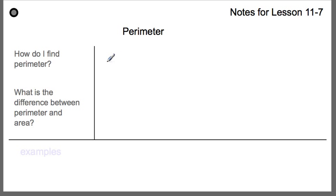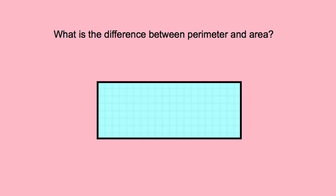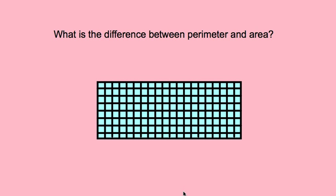When you find out how to find perimeter, write it in on your note card. The second question is: what's the difference between perimeter and area? Perimeter is the outside of a shape. Area is on the inside of the shape. Peri means around and meter means measure, so it's to measure around something — the length of each side around the outside. Area means how many little squares can fit inside of your perimeter.